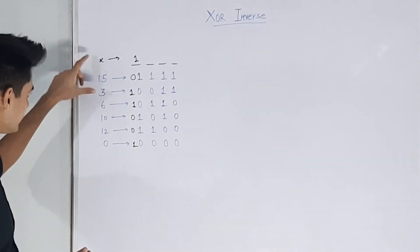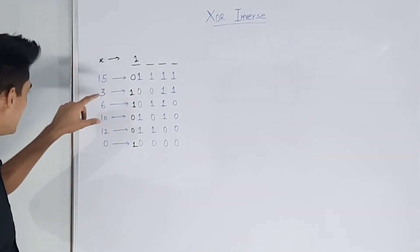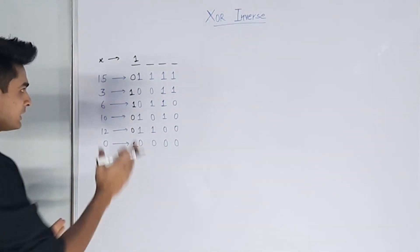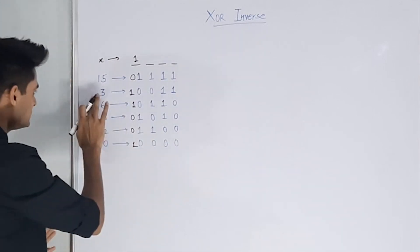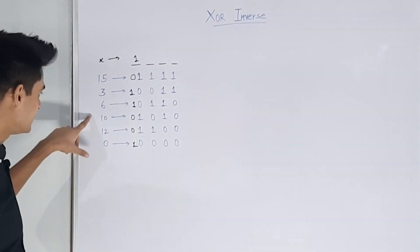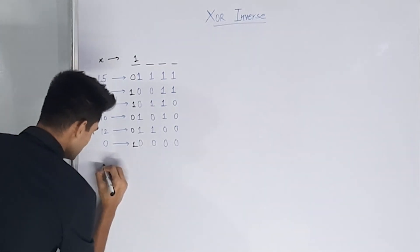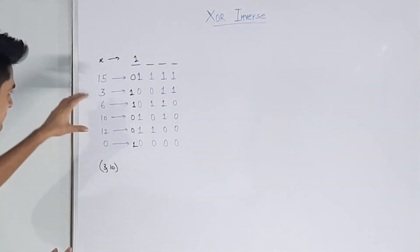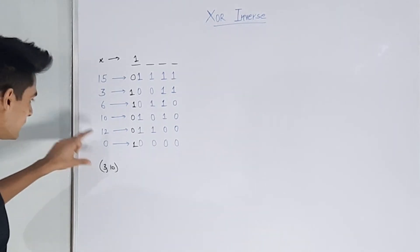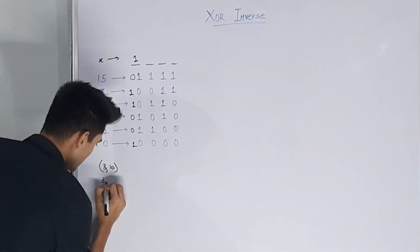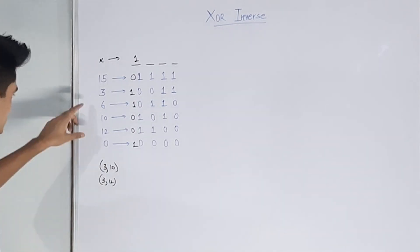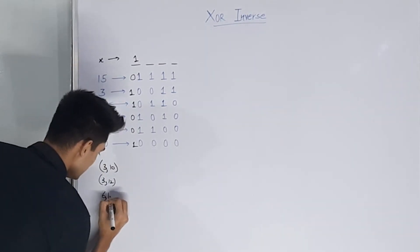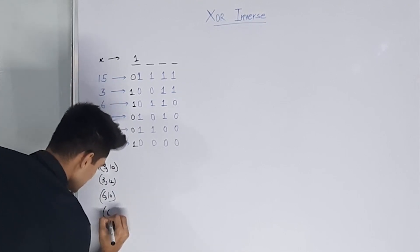Now let's count the guaranteed inversions. If we look at 3 after XOR: this bit is 1, and 10 after XOR: this bit is 0. So no matter what values come after this bit, 3 after XOR will always be greater than 10 after XOR — so (3, 10) is a guaranteed inversion. Similarly, (3, 12) is an inversion, then (6, 10) and (6, 12) are also inversions — giving us 4 guaranteed inversions when this bit is 1.